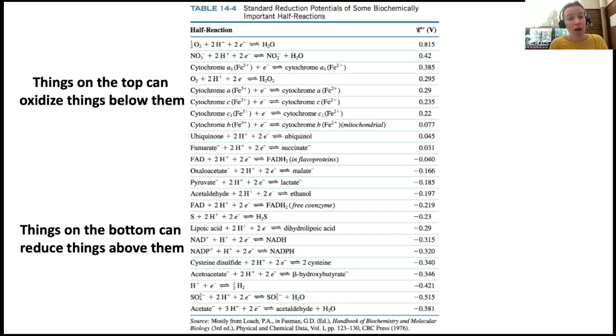Things at the top of this chart, like oxygen, are really great at taking electrons. They want to grab up those electrons. And things at the bottom want to give away their electrons. Said another way, things at the top of the chart can oxidize things below them. Things on the bottom of the chart can reduce things above them. Said just one more way, folks, because I know there's a lot of ways to think about this, and some will be better for some of you than others. Things on the top are good oxidizing agents.